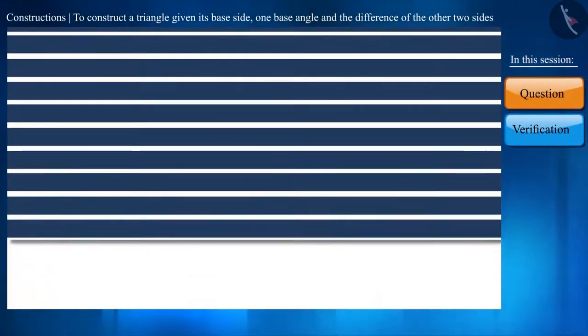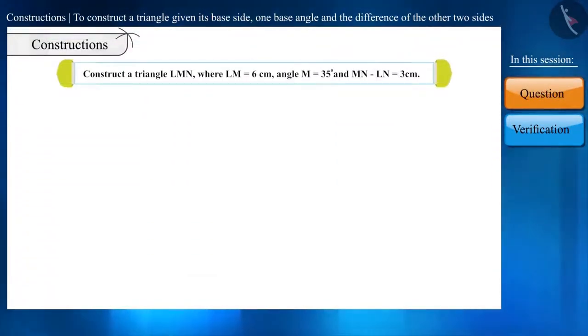So let's start with this question. Construct the triangle LMN where LM is equal to 6 cm, angle M is equal to 35 degrees, and MN minus LN is equal to 3 cm.